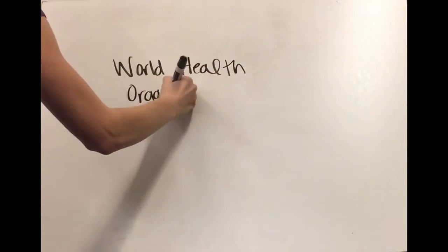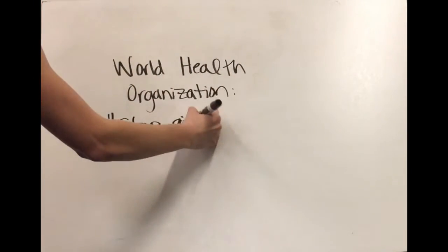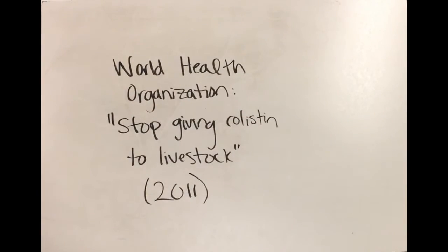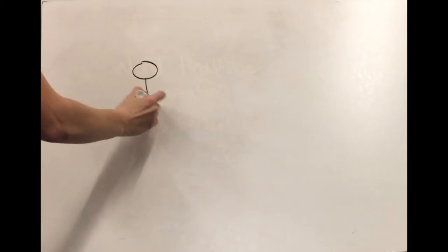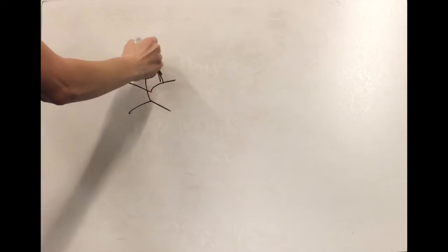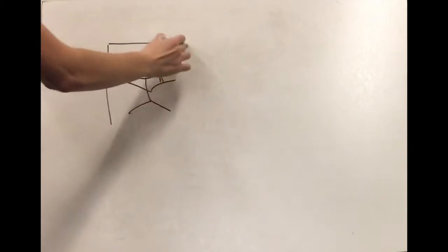This seems to be a major oversight. We knew how horizontal transmission worked. We knew that colistin was one of our last lines of defense, and we kept giving it to livestock anyway. The World Health Organization even issued a statement in 2011 that made it abundantly clear that we needed to stop using colistin in agriculture immediately. But that didn't put enough pressure on governments or farmers to change farming practices, and we just kept using colistin anyway.